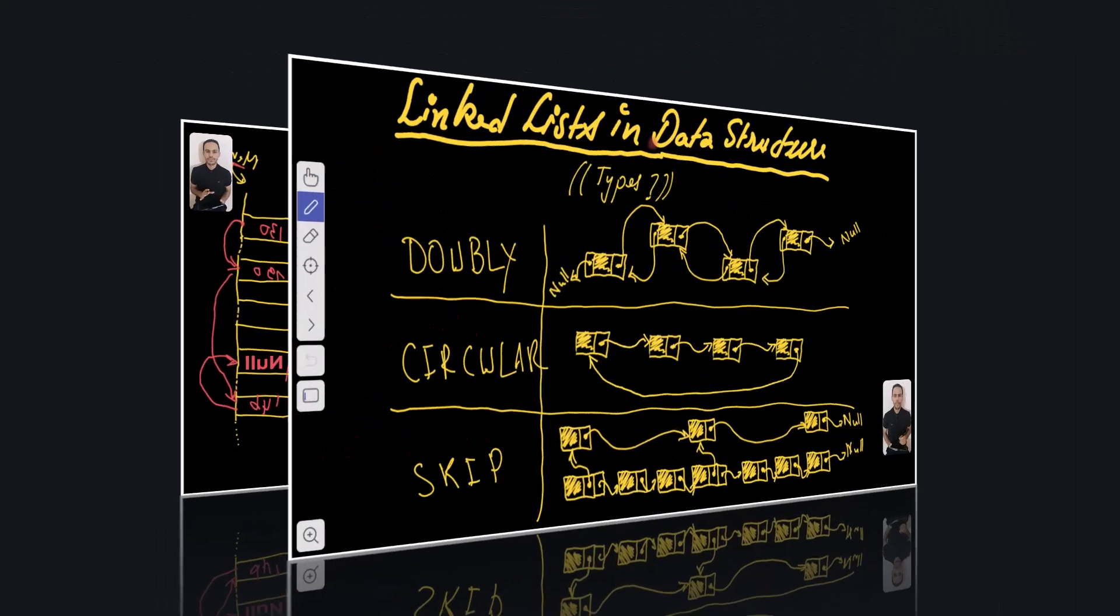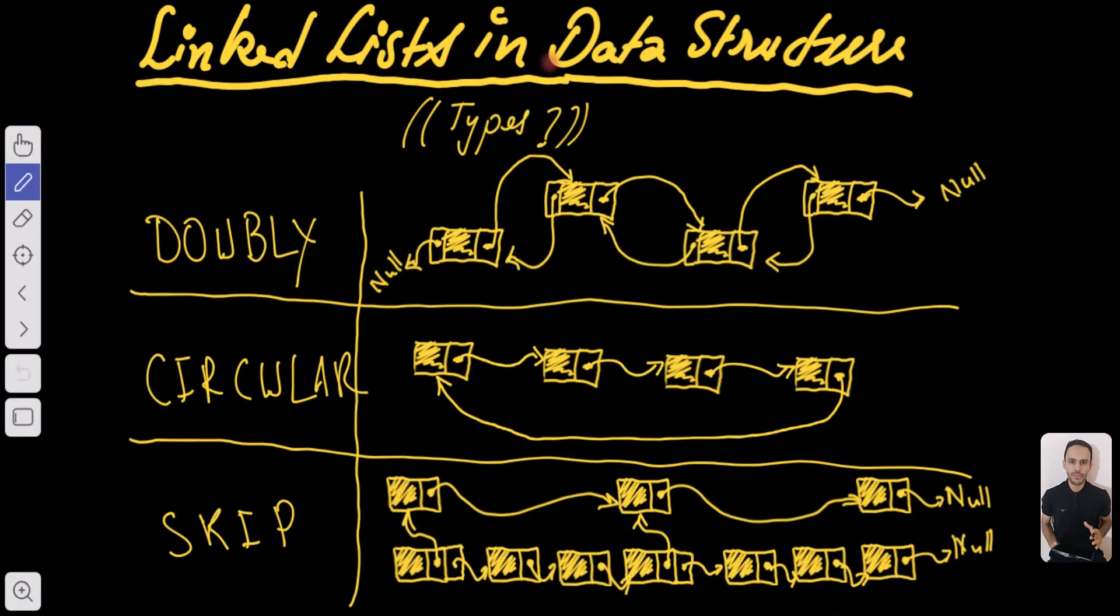Now let's move on to see other types of linked lists. We have the doubly linked list. In this type of linked list each element or each node in the linked list has two pointers: a pointer to the next element in the list and a pointer to the previous node in the list.